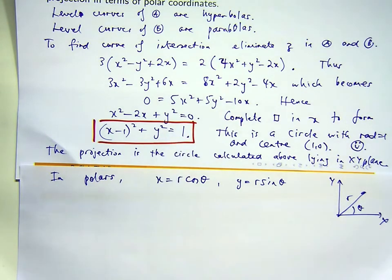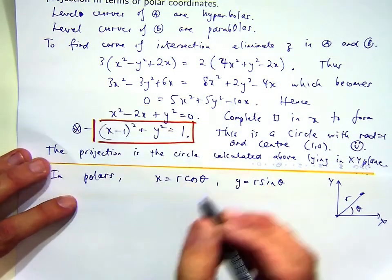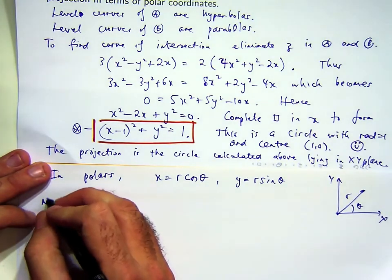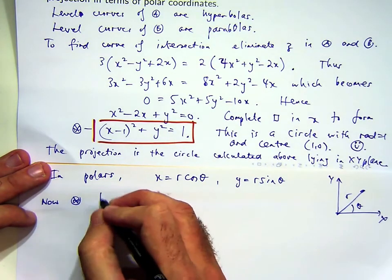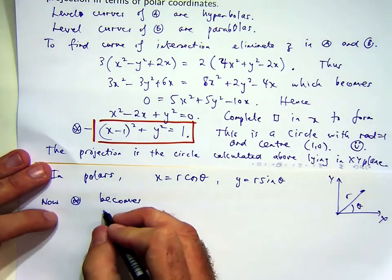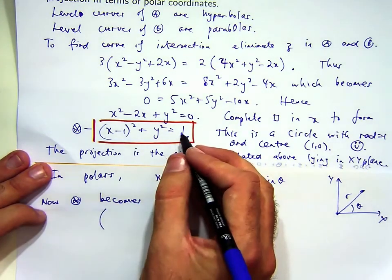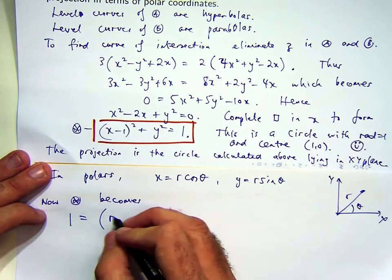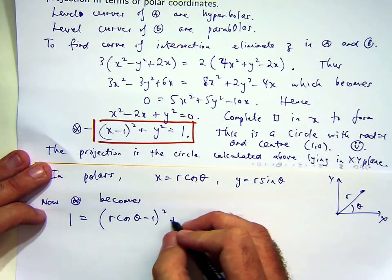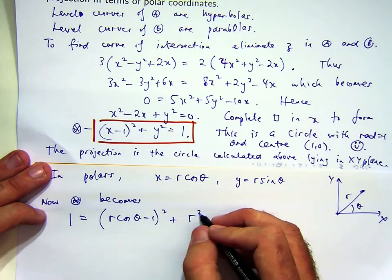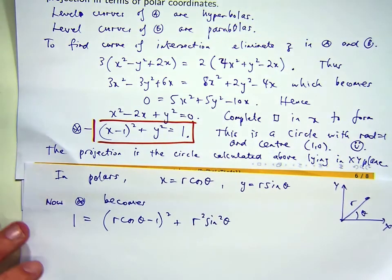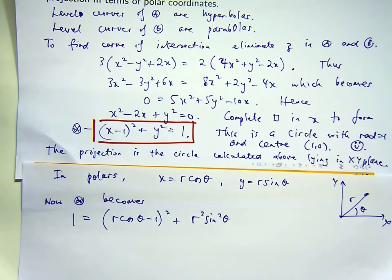What we'd like to do is get this in terms of these polar coordinates. The easiest way to do it here is just replace x with r cos theta and y with r sin theta in that boxed expression. So we're going to get r cos theta minus 1 squared plus r² sin² theta. Now hopefully we can simplify that in some way.